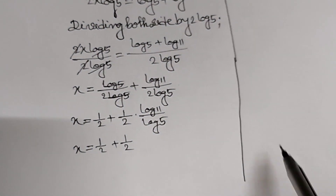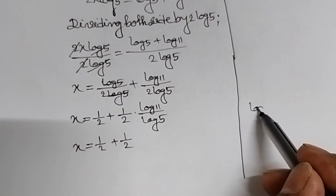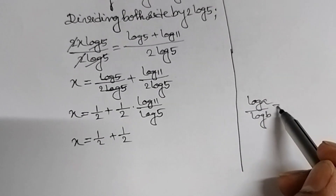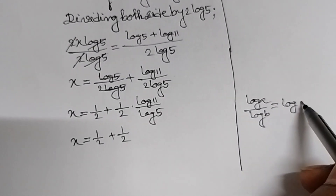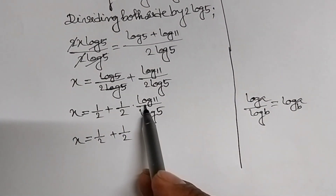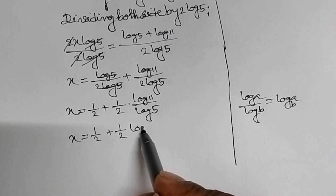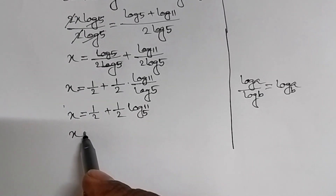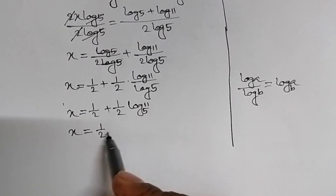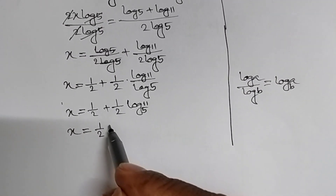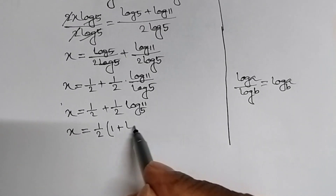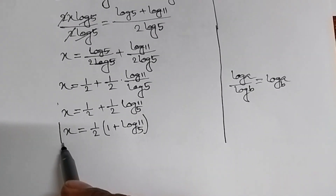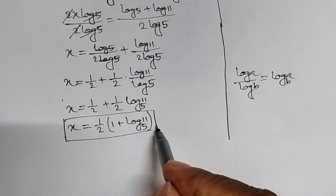Again, we know the formula log a upon log b equal to log a base b. Therefore log 11 upon log 5 can be written as log 11 base 5. So x equal to 1 upon 2 plus 1 upon 2 log 11 base 5. Taking 1 upon 2 common, x equal to 1 upon 2 into 1 plus log 11 base 5. This is our answer. Now we will verify whether this answer is correct or not.